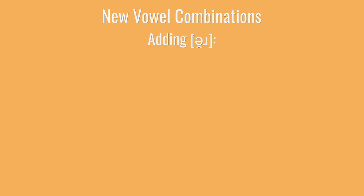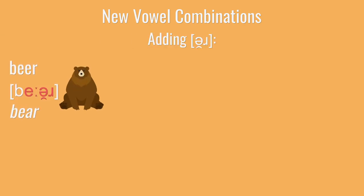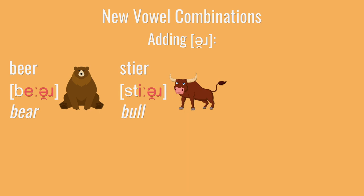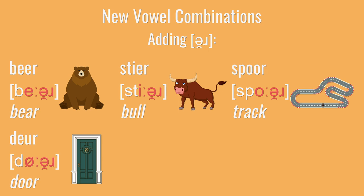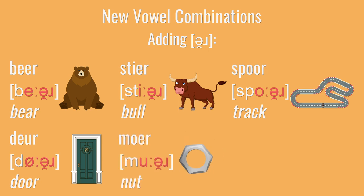Then there's a group of vowel combinations ending in an R sound. Basically when you have an R that comes after a vowel, it's going to affect that vowel mostly by adding in an ER sound after it.